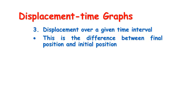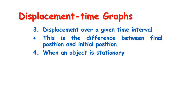We can find when the object is stationary. If it's stationary there's no change in its position, which means the graph must have a horizontal section. So whenever the graph is horizontal, it means the object is not moving.